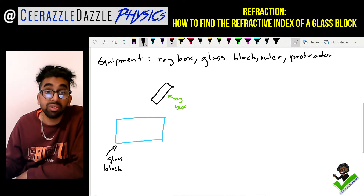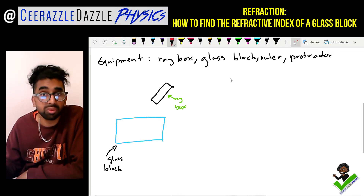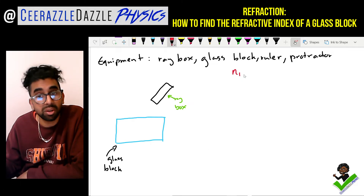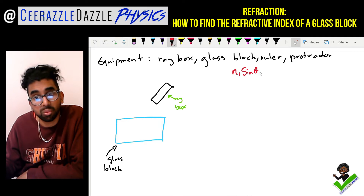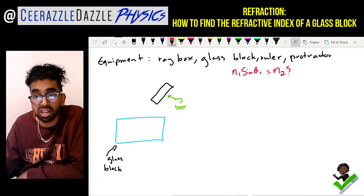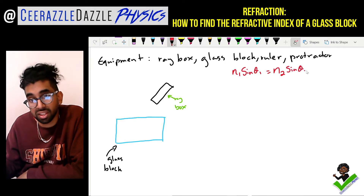The formula you need for this experiment is Snell's law, which states that the refractive index of the first medium N1 times sine of the angle θ1 is equal to the refractive index of the second material N2 times sine of the angle θ2.